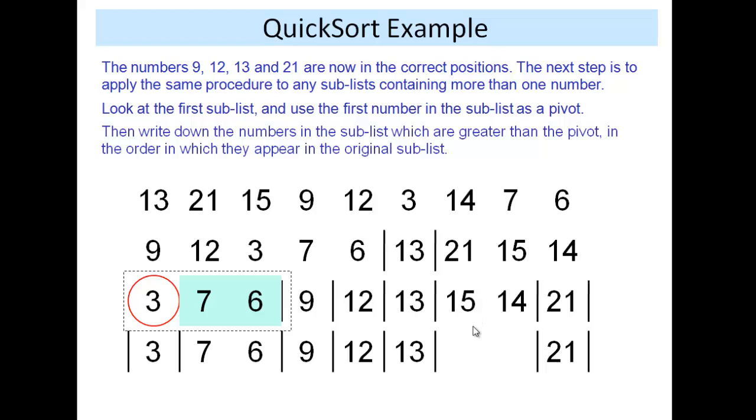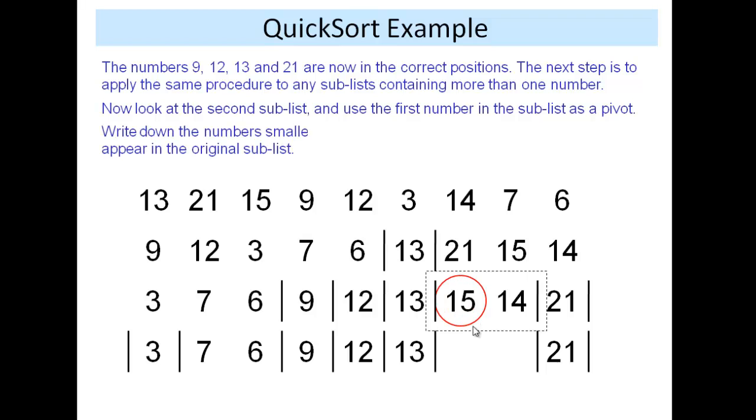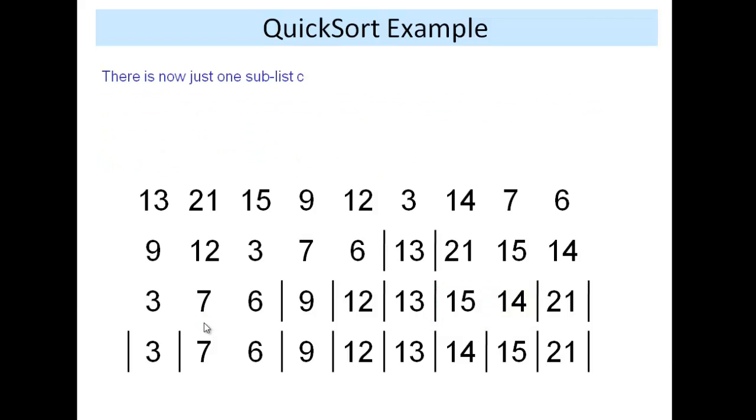We then look at this sub-list here. First number is a pivot. Numbers smaller than or equal to first, that's the 14, 15, and then write the pivot down. And that then completes the next pass. That was the third pass, wasn't it? But we still got a sub-list of two. So we now need to sort that.